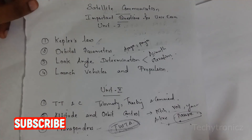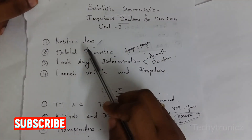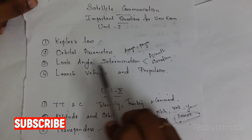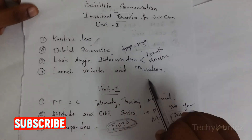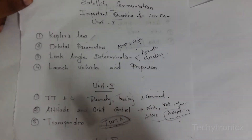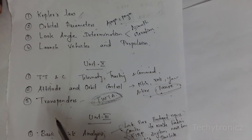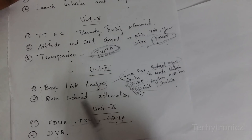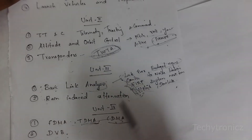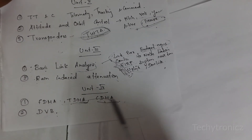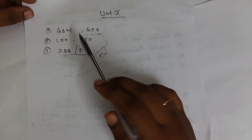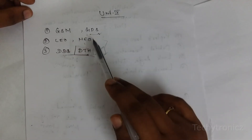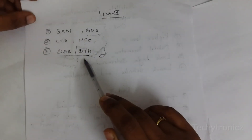These are the important questions across all five units. Unit 1: Kepler's law, orbital parameters, look angle determination, launch vehicles and propulsion. Unit 2: TT&C, attitude and orbit control, transponders. Unit 3: basic link analysis and rain induced attenuation. Unit 4: FDMA, TDMA, CDMA, DVB. Unit 5: GSM, GPS, LEO, MEO, DBS, and DTH.